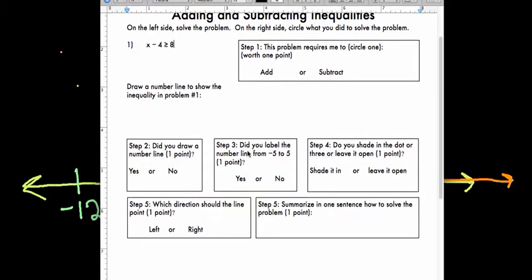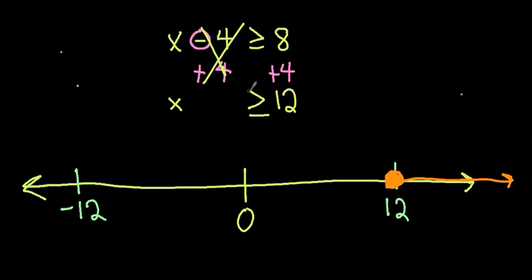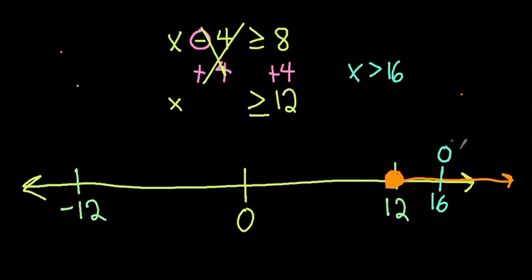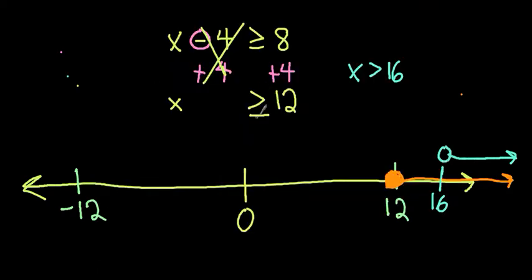The worksheet will ask you a series of questions to make sure you're doing all the steps correctly. First: did you draw a number line? Circle yes if you did. Next: did you label the number line with numbers? Then: do you shade in the dot or leave it open? If there's a greater than or equal to sign, you shade it in. If there's no equal to — like if you had x is greater than 16 — you draw an open circle and leave it unshaded. In our case, since I have an equal to, I circle 'shade it in.' Then: which direction does the line point? Mine points to the right, so I drew my line to the right.